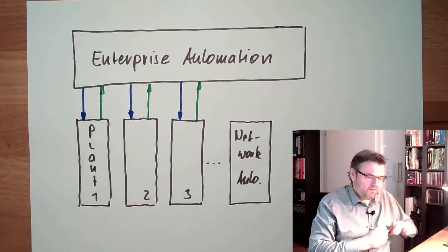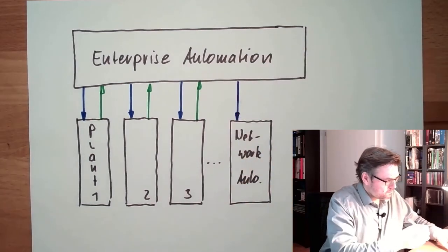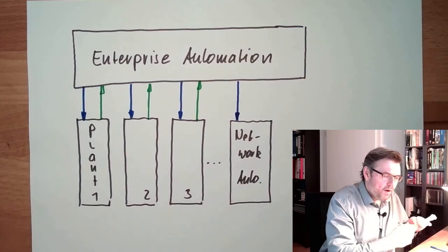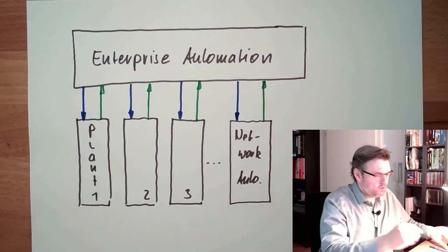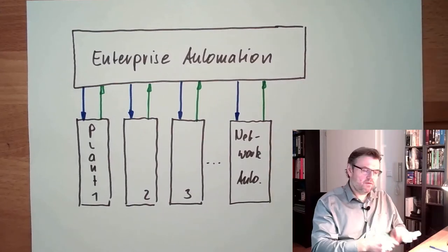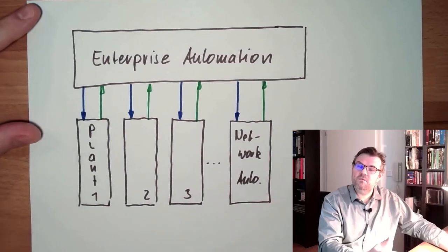So I also have to have interfaces to the network automation to know how much power I might be able still to distribute or not. The network infrastructure, the grid, need to have information to the grid, from the grid.